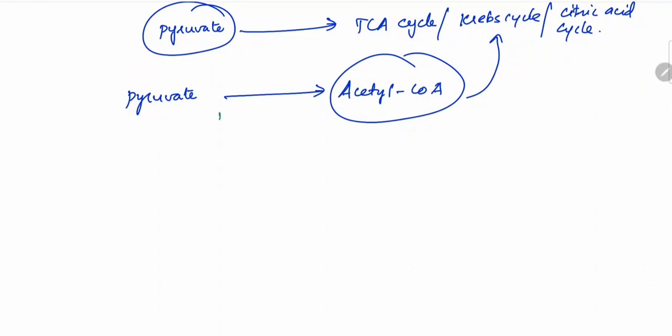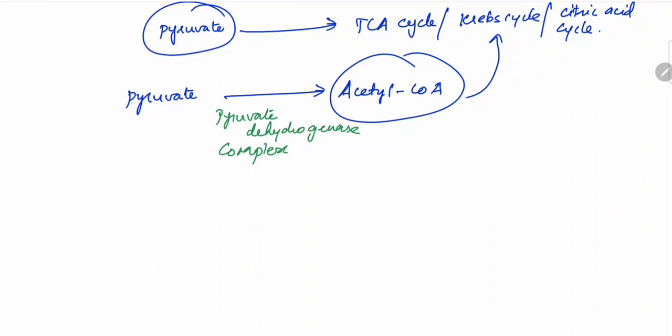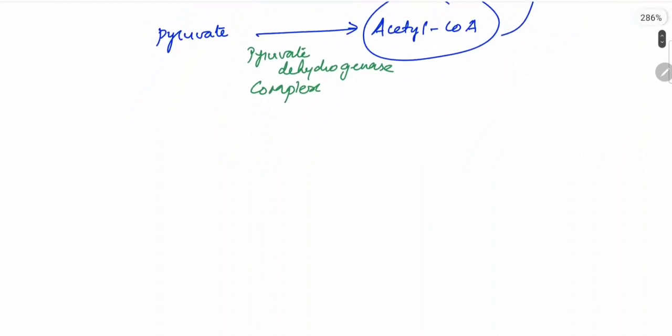A series of enzymes called pyruvate dehydrogenase complex helps in conversion of pyruvate to acetyl Coenzyme A. What is this complex composed of? It is composed of three enzymes and five cofactors.